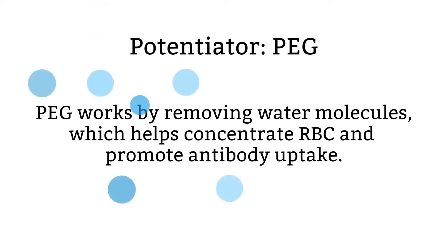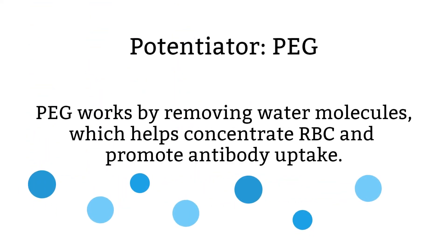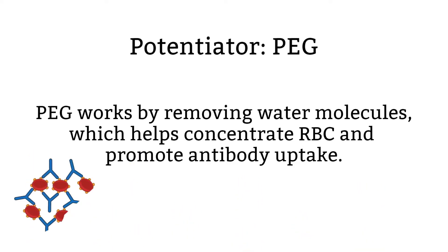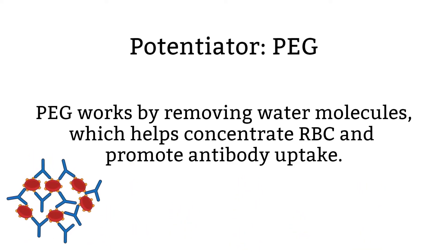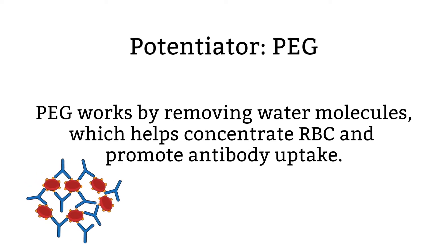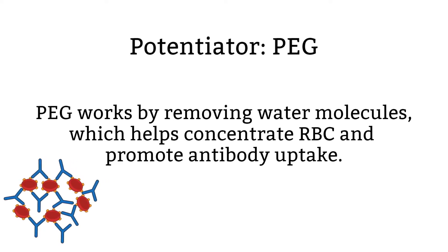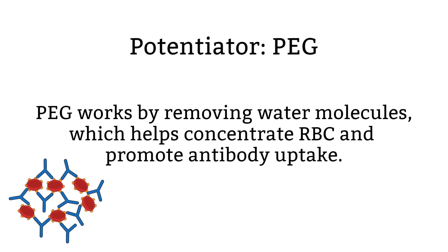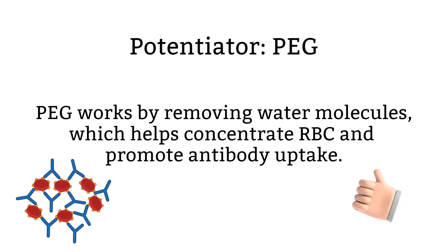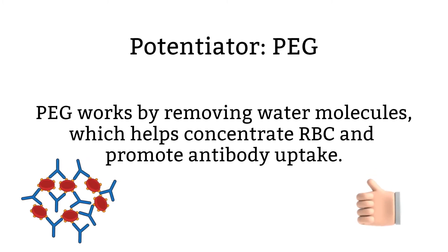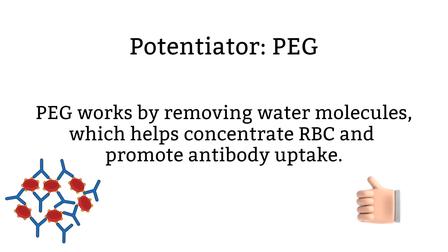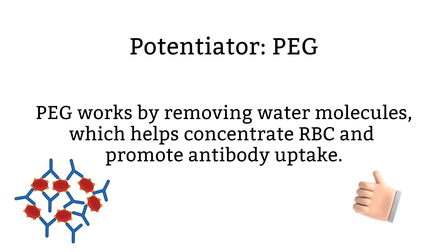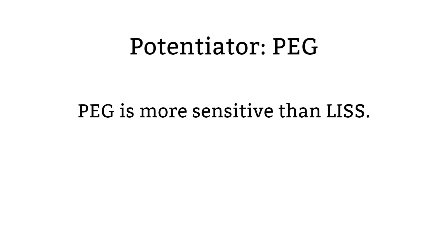PEG, or polyethylene glycol, is one of the common potentiators used in blood bank. It works by removing water molecules, which helps concentrate antibody and RBCs in the test tube. This interaction results in enhancing the red blood cells to uptake more antibodies. If more antibodies bind to red blood cells, the reactions are stronger, and we can see the agglutination better.